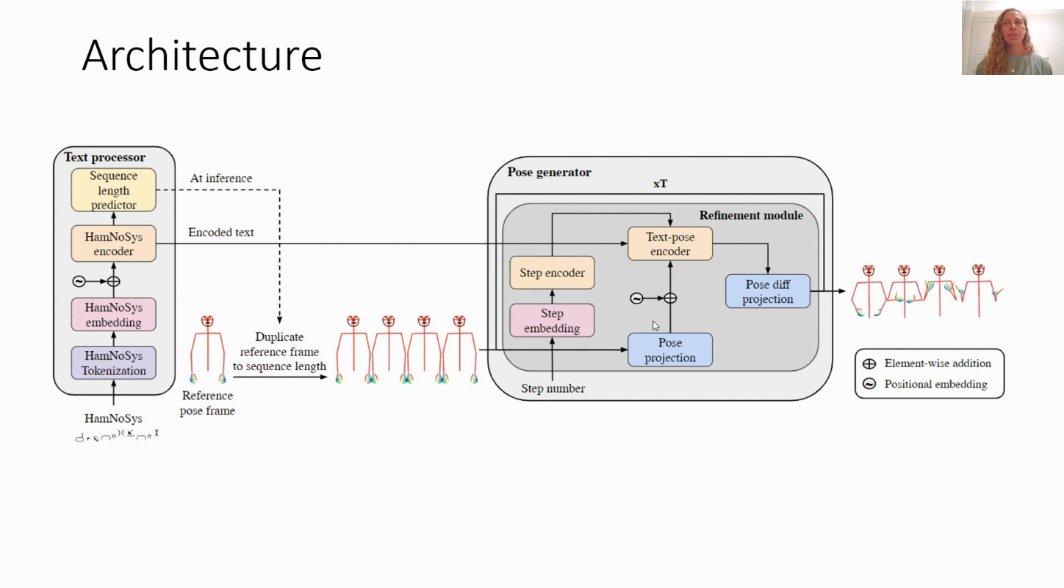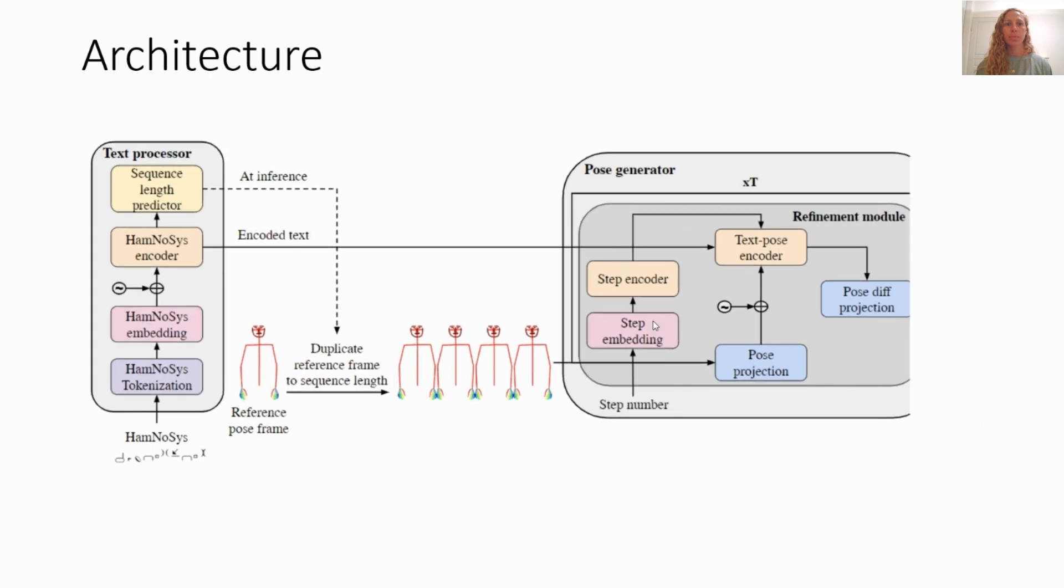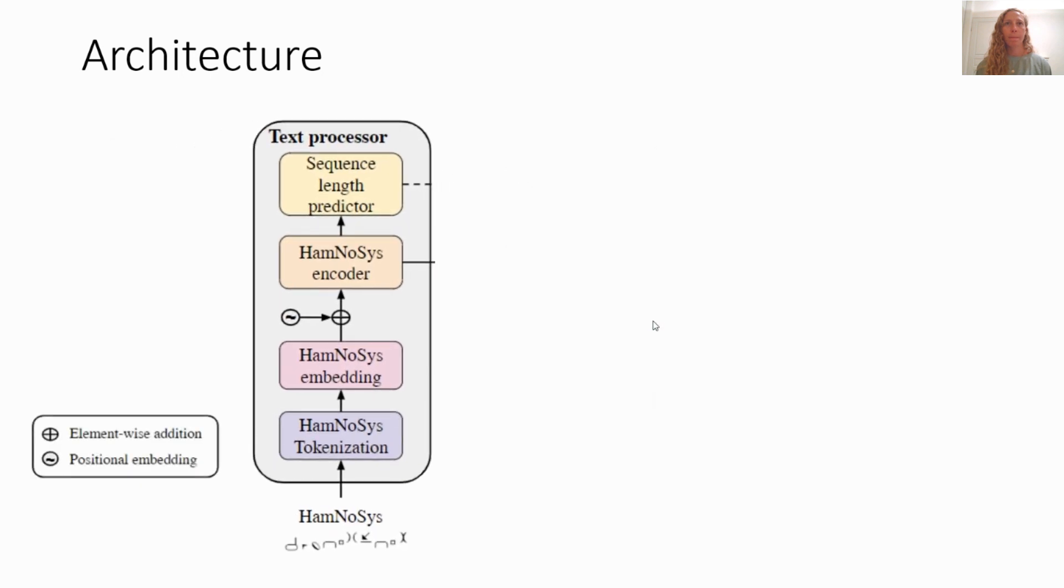The full architecture of our model is presented here, and it is composed of two parts. The first part, the text processor, gets the HamNoSys sequence as input and encodes it using a transformer encoder. The encoded text is passed on both to a fully connected layer predicting the sequence length of the pose sequence, and to the pose generator.